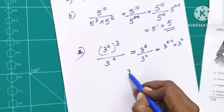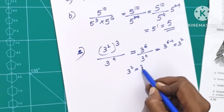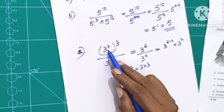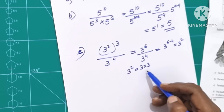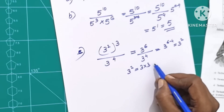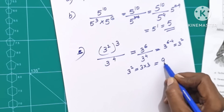3 squared all raised to 3 equals 3 raised to 3. That is what we have to say here. 3 raised to 3 divided by 3 raised to 3. So we have the answer: 1.